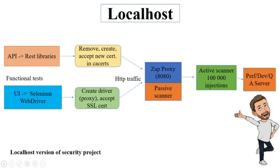It is a very important part — you need to create a ZAP certificate for your browser, and API calls of your test will fail immediately with an SSL error. After you resolve proxy and certificate issues, everything is clear and easy.